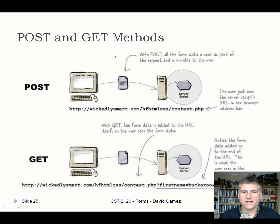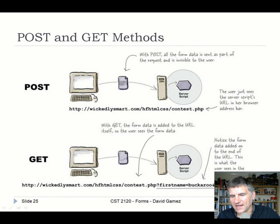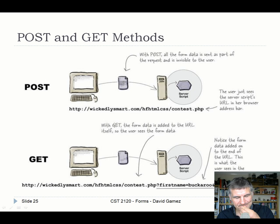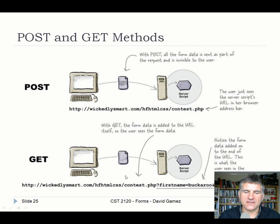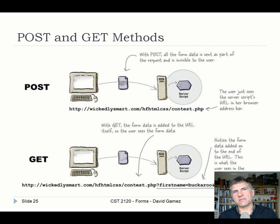With a GET request, the browser takes everything from the input fields and appends them to the URL as a query string — a question mark followed by key-value pairs separated by ampersands. For example: ?firstName=John&lastName=Banzai. The browser generates this URL and requests it from the server. GET is appropriate for things like searches. POST is different — it sends a message to the URL with the data inside the message body.